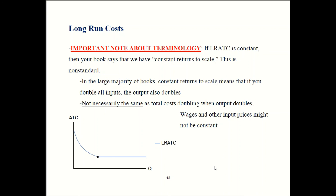For example, it could be the case that the wage would have to be higher in order to attract more workers. You might be paying workers $20 per hour, which attracts some number of workers. But if you want to double your workforce, you have to draw new workers in, and to do that you might have to pay them more. So your wage cost might not simply double — your total cost could more than double. If I paid twice the workers the same wage, that might cost double. But if I'm paying a higher wage to attract new workers, then my wage cost might more than double. So doubling your inputs doesn't necessarily double your costs, and these two definitions are not the same.